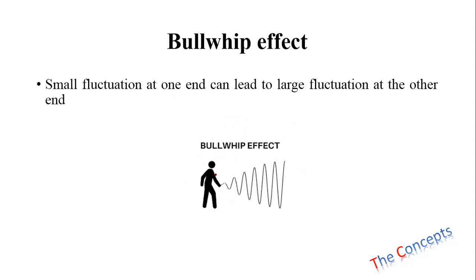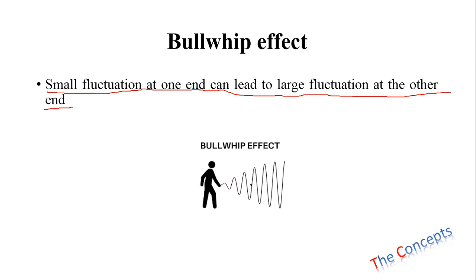What is a bullwhip effect? To understand it, consider this: when small fluctuations at one end can lead to large fluctuations at the other end, that is known as the bullwhip effect. As you can see with this whip, a slight jerk of the hand or elbow can lead to a larger impact further along the chain. If you imagine pulling a whip, a small change starting from one end results in a larger change at the other end — that is the bullwhip effect.